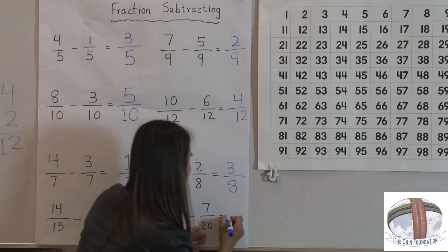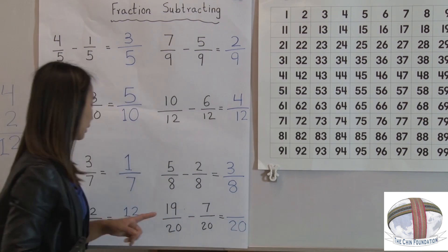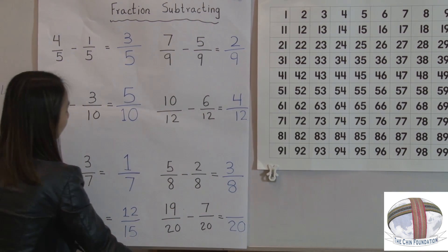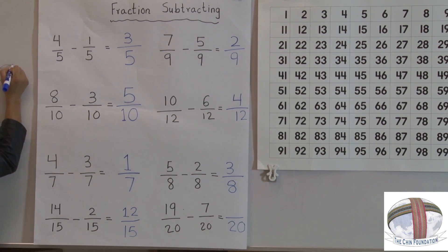Okay, 20. 19 minus 7, 19 minus 7. 9 take away 7, 8, 9, 2. 1 minus nothing, 1, 12.